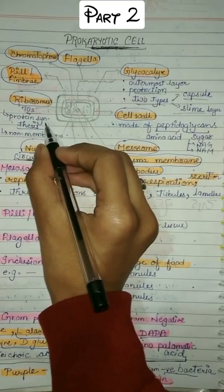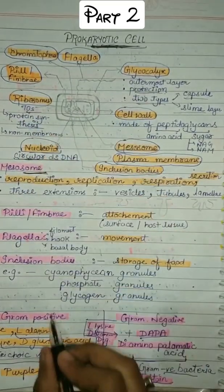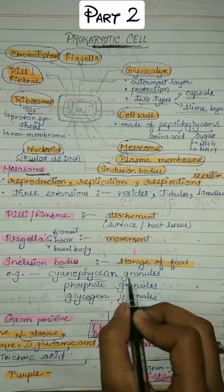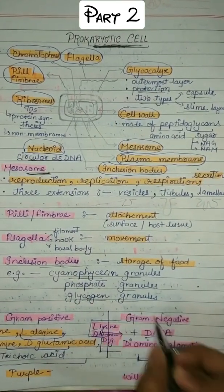There are ribosomes which help in protein synthesis. There are inclusion bodies which help in storing food. Inclusion bodies are of different types: cyanophycin granules, phosphate granules, and glycogen granules.